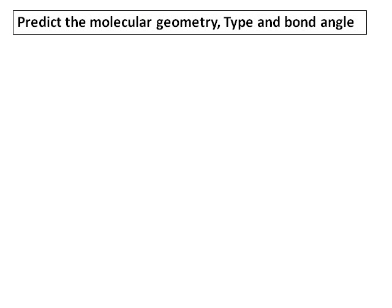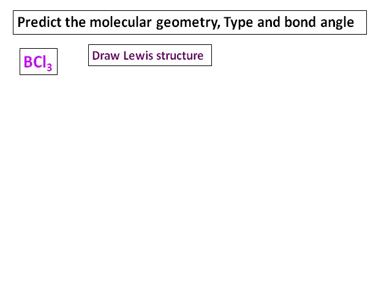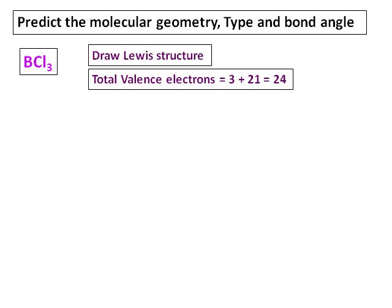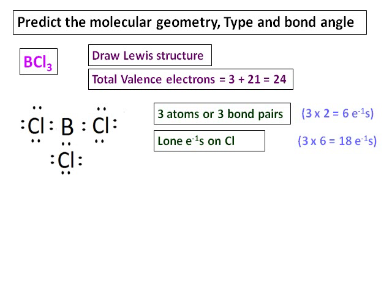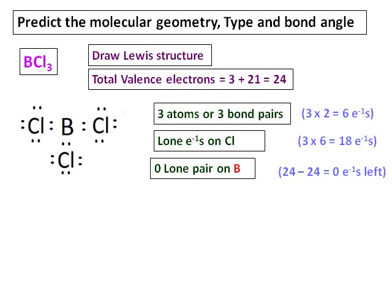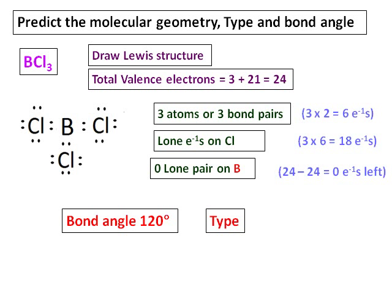Let's do some examples. Predict the molecular geometry type and bond angle. The first example is BCl3. Draw the Lewis structure first. Count the total valence electrons — that comes to 24. Draw the skeleton molecule: three bond pairs use six electrons, and six lone electrons on each chlorine gives 18 electrons, totaling 24. All electrons are used up, so there is no lone pair on boron. Hence the molecule type is AB3 and the bond angle is the perfect 120 degrees.